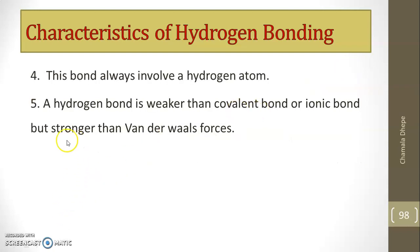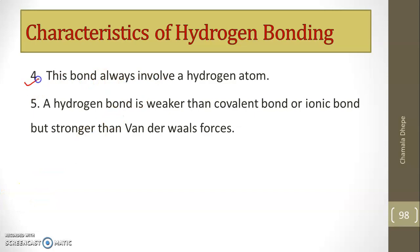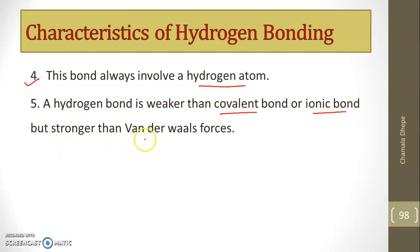The fourth characteristic is that hydrogen bonding always involves a hydrogen atom. If hydrogen is absent, there is no hydrogen bonding. There must be a hydrogen atom linked with a highly electronegative atom. Hydrogen bond is weaker than a covalent bond and ionic bond, but it is stronger than van der Waals forces or intermolecular attractions.